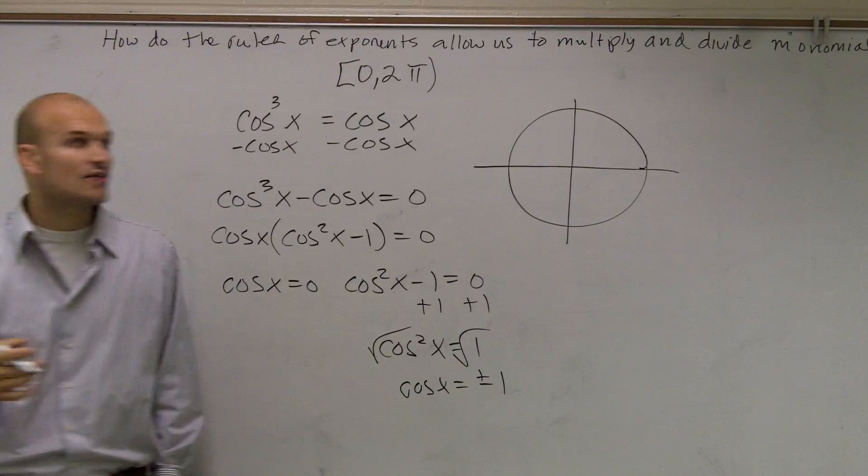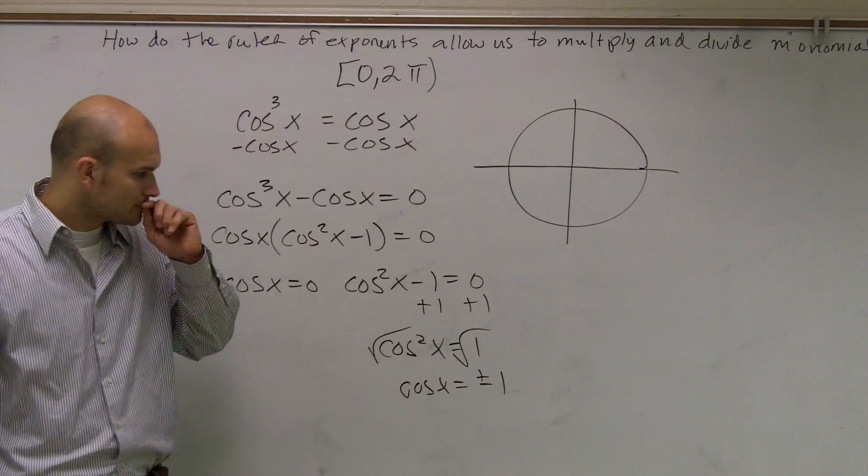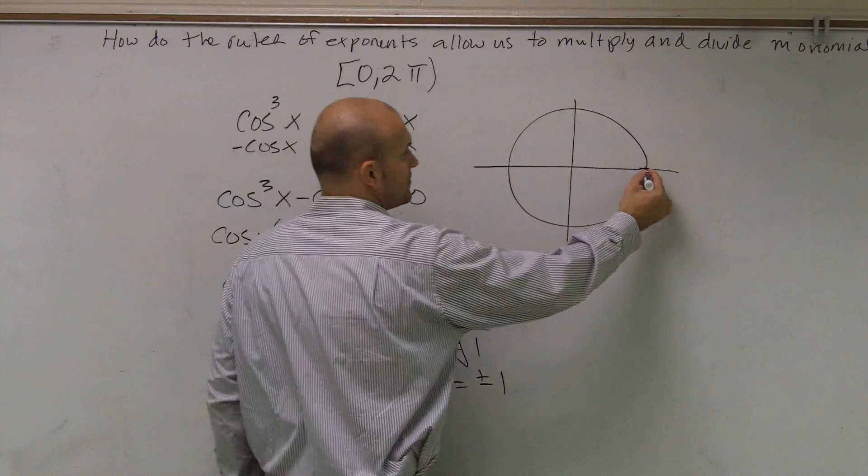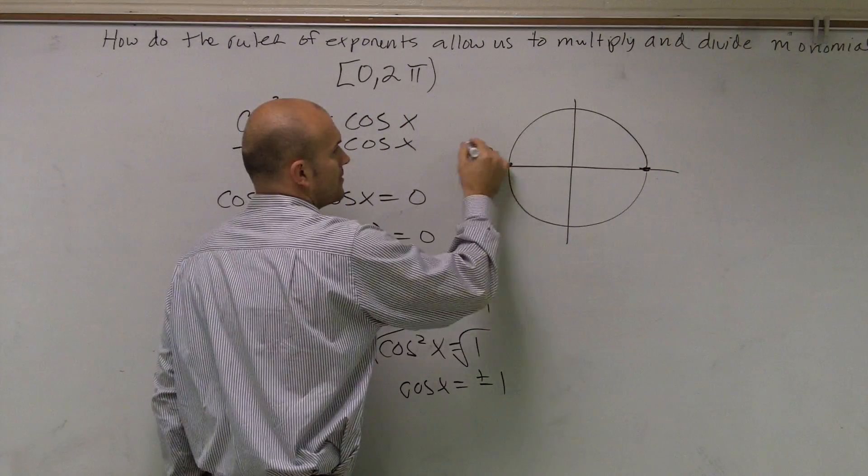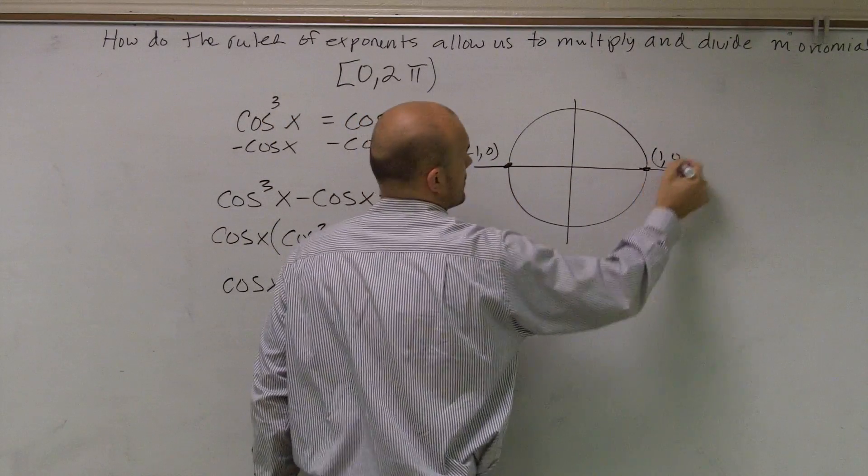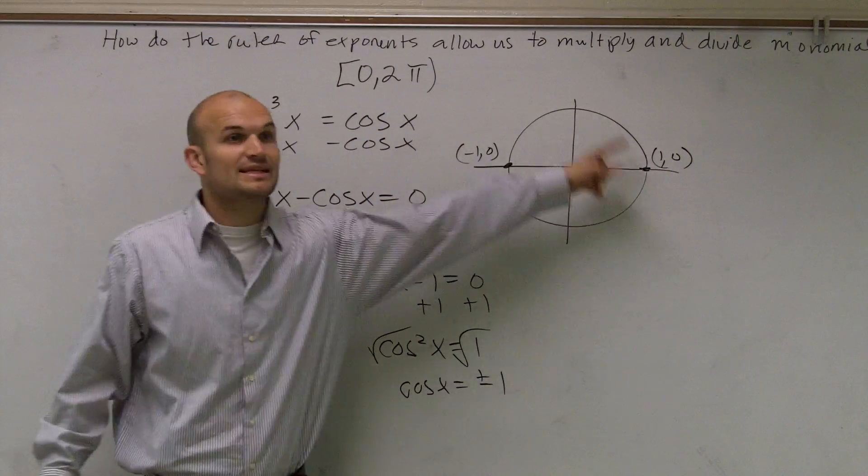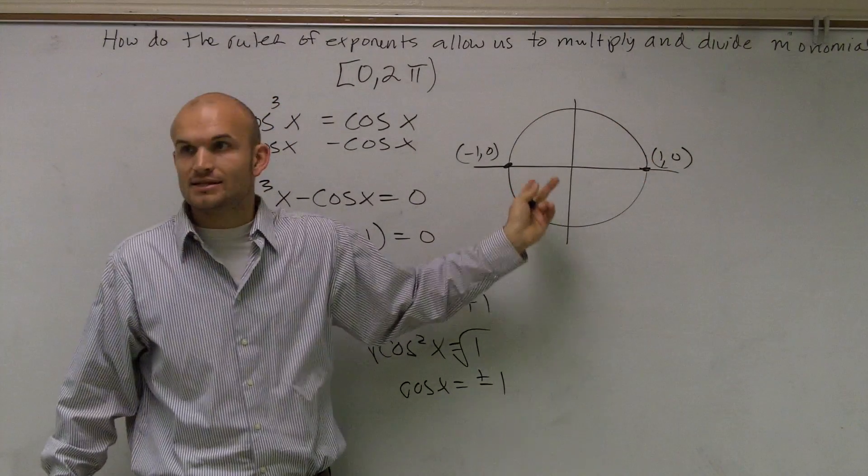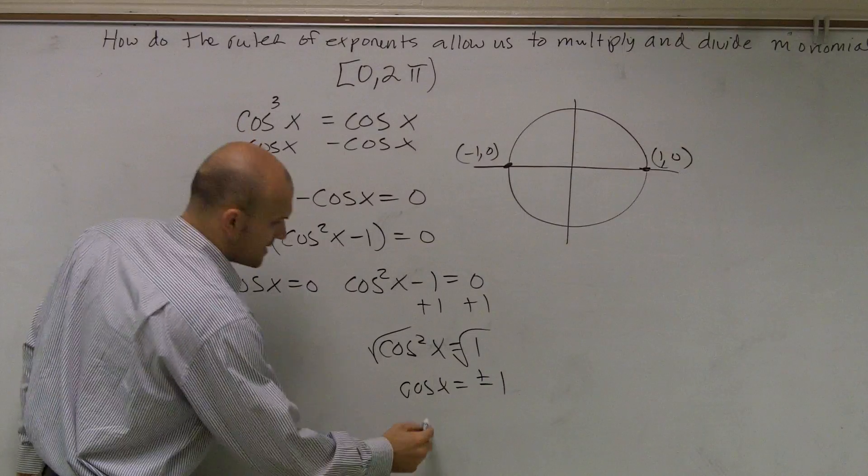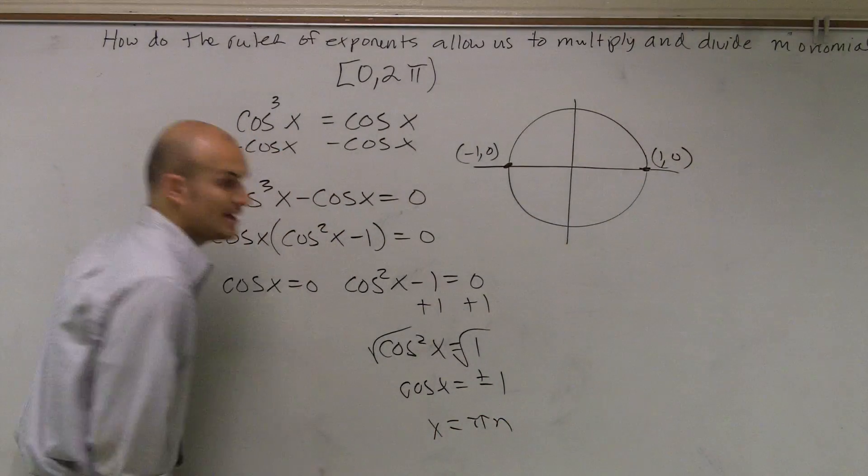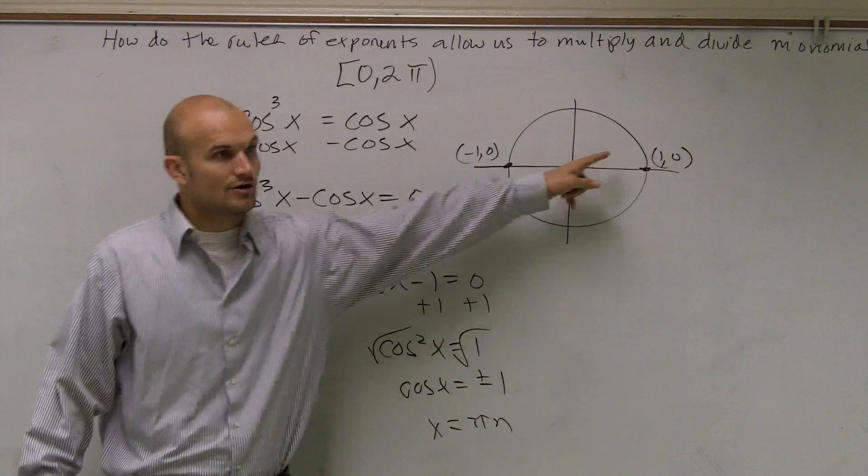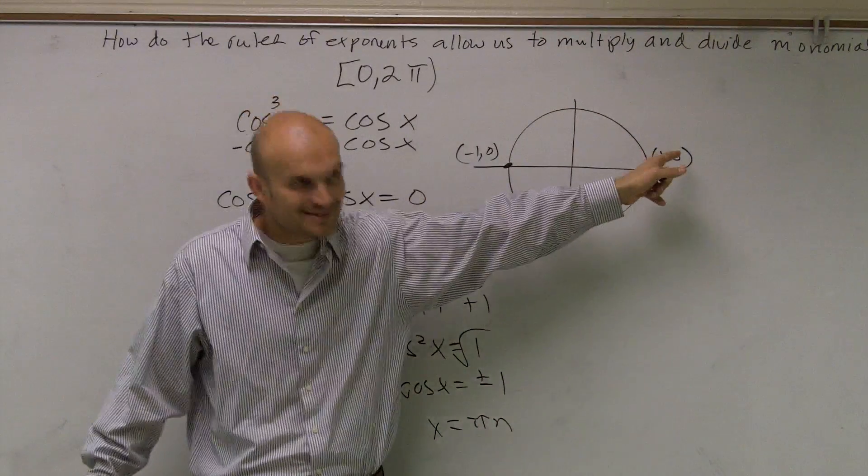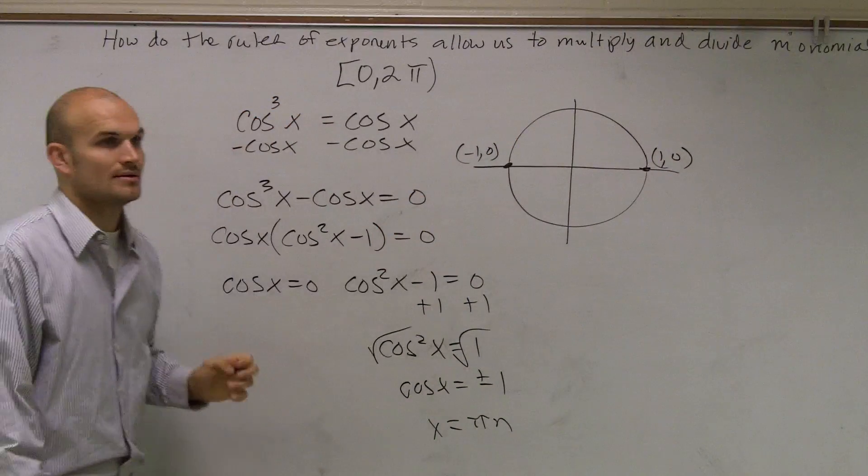Remember, cosine is going to be your x value of your coordinate on the unit circle. So you could say, so obviously here we have 1, and here we have negative 1. Correct? So the distance between these two is just going to be π. We don't need to label both of them. We could just say 0 plus π to get to the next one. So here we're going to say x equals πn. If n was 0, it'd give you that point. If n was 1, it'd give you that point. If n was 2, it'd be 2π. But if there's a restriction, I'll just put n.